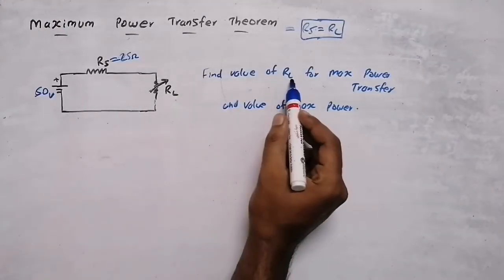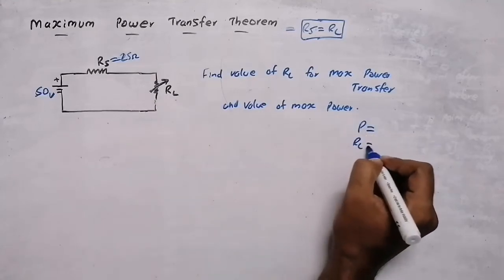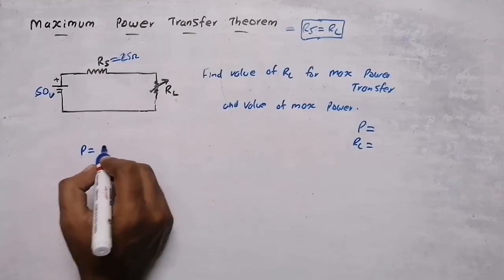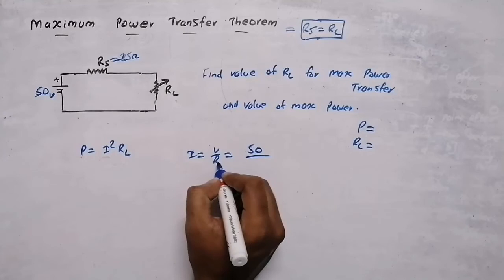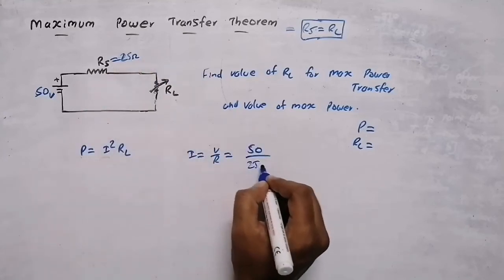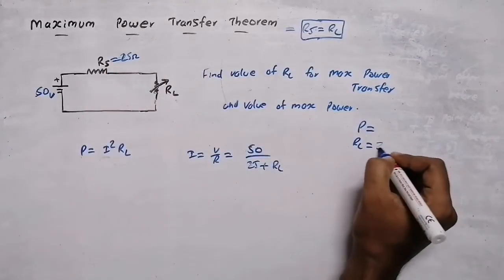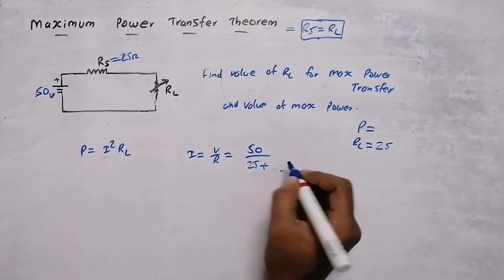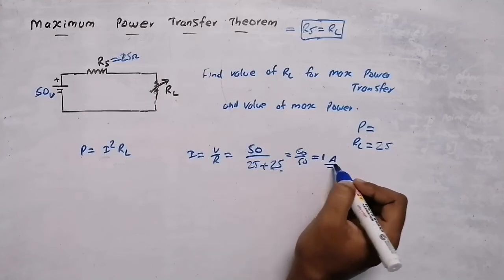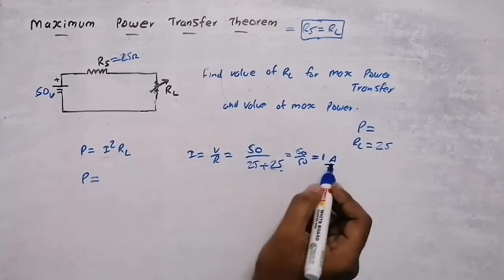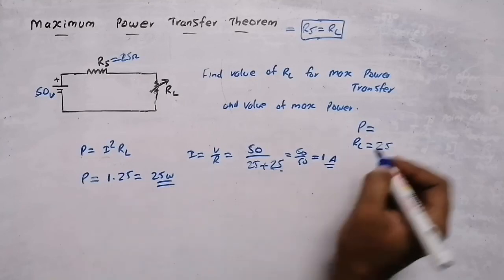Now in this problem, we need to find the value of load resistance for maximum power transfer and the value of maximum power. The value of I is V by R; V is the source voltage, 50 volts, divided by R which is Rs plus Rl — that is 25 ohm plus Rl. For maximum power transfer, Rs equals Rl, and since source resistance is 25 ohm, load resistance is also 25 ohm. So I equals 50 divided by (25 plus 25) equals 50/50 equals 1 ampere. Maximum power equals I squared into Rl equals 1 squared into 25 equals 25 watts.